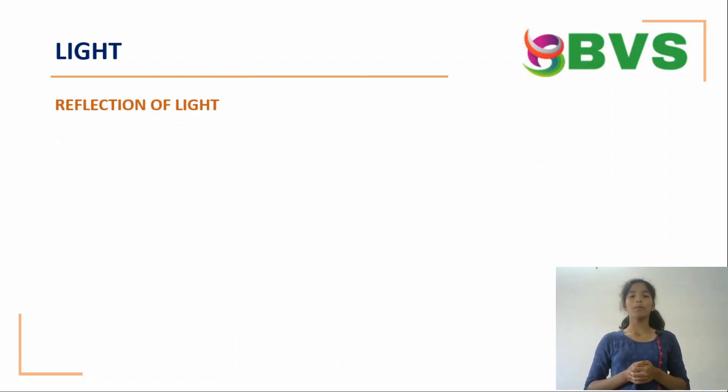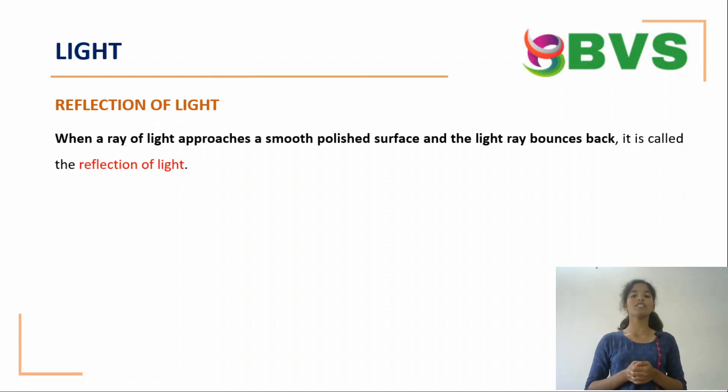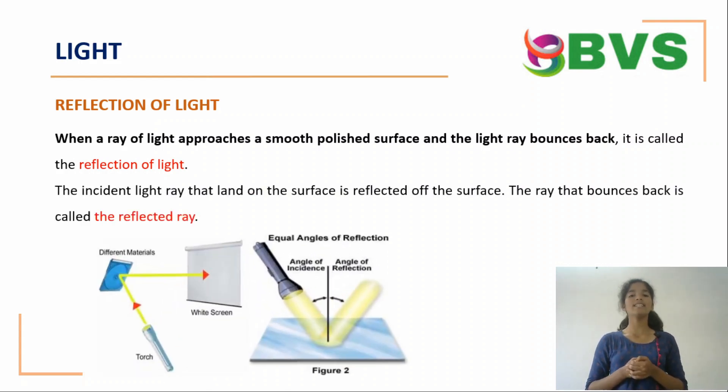Reflection of light. When a ray of light approaches a smooth polished surface and the light ray bounces back, it is called the reflection of light. The incident light ray that lands on the surface is reflected off the surface. The ray that bounces back is called the reflected ray.